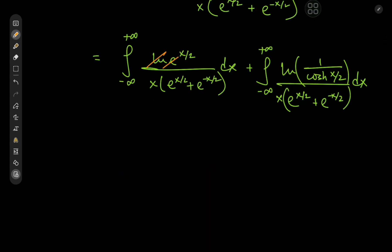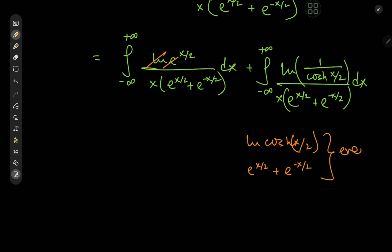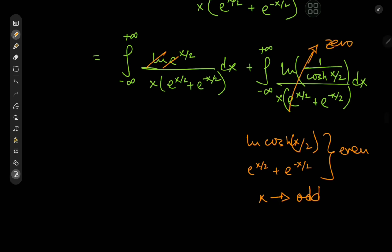For the second integral, note that log(1/cosh(x/2)) = −log(cosh(x/2)), which is the logarithm of an even function — hence an even function of x. And eˣ/² + e^(−x/2) is also even in x. But x is an odd function. So overall the integrand is an odd function of x. Integrating an odd function over the symmetric interval (−∞, +∞) gives zero.